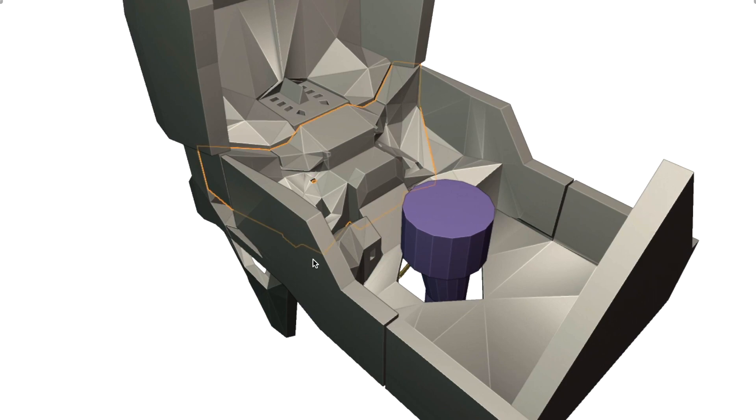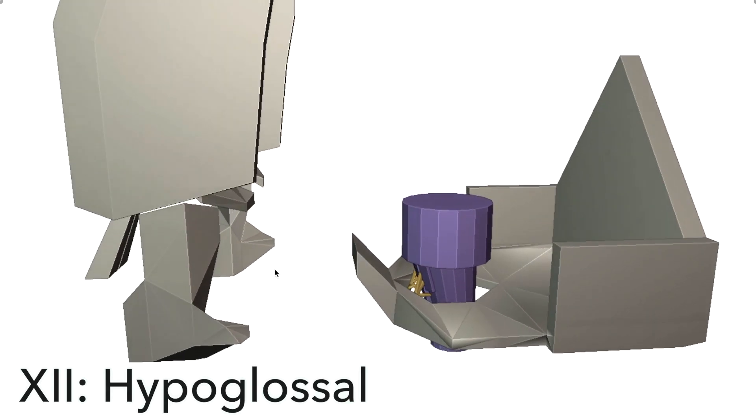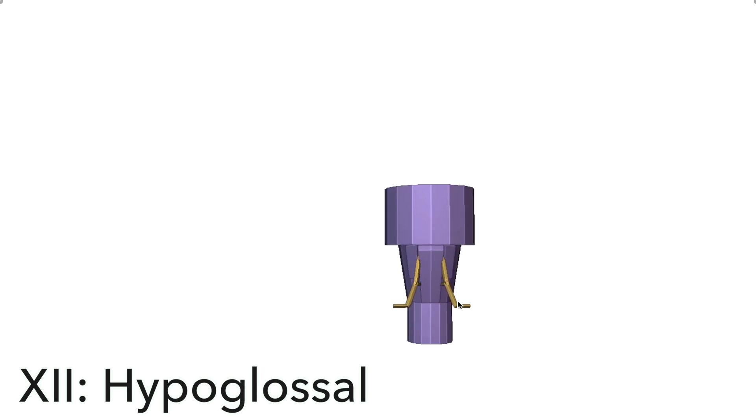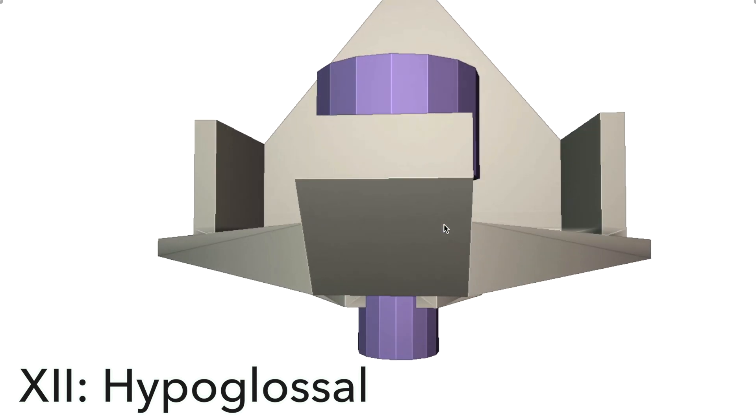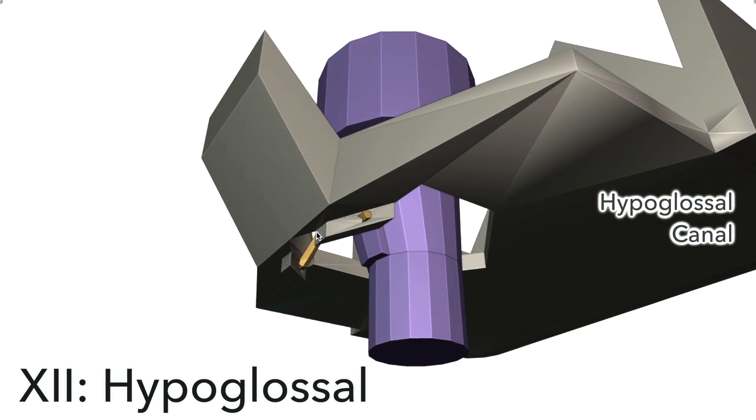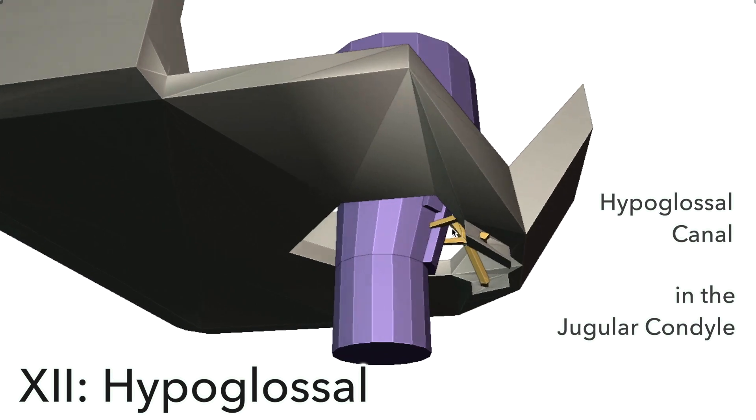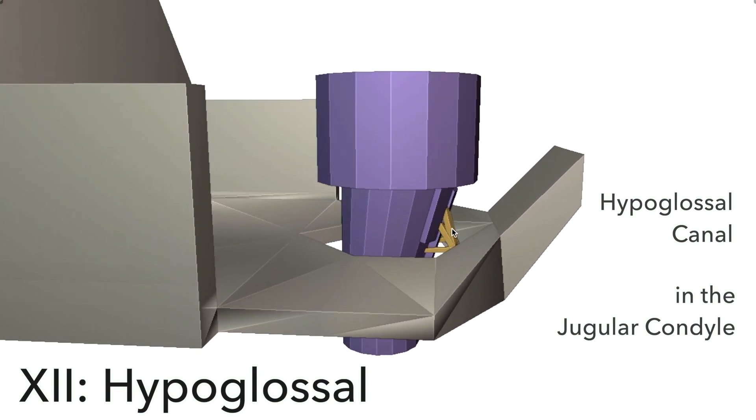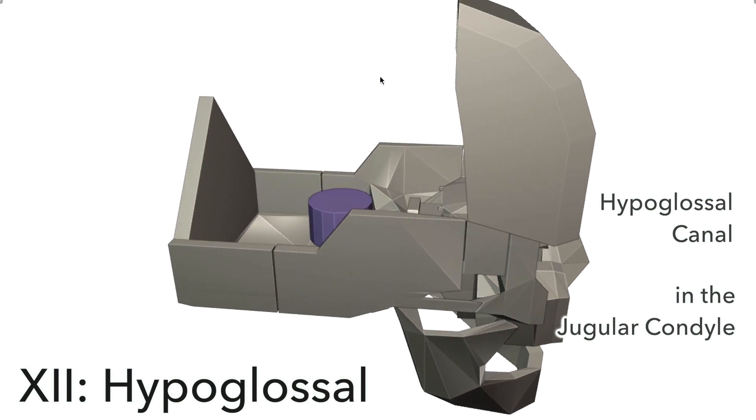Finally, we have number 12, the last of our cranial nerves, the hypoglossal. It comes from the medulla between the pyramid here and the olive over here. So it comes out from between those two and heads through the hypoglossal canal. This part here is called the jugular condyle of the occipital bone. And the hypoglossal canal is just a little hole running through that to facilitate the passage of the hypoglossal nerve. And its job is to power the intrinsic muscles of the tongue.